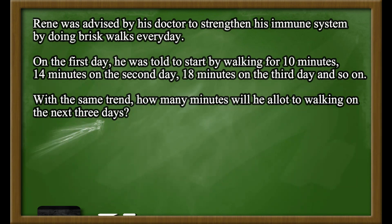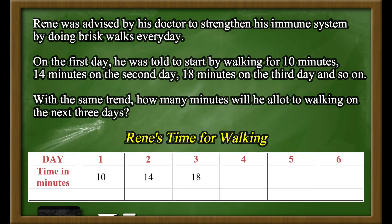To understand this, let's make a table to see the days and walking times of Rene. Here, we can see that Rene walks 4 minutes longer than the previous day — he adds 4 minutes each subsequent day of walking. For the next days, adding 4 minutes again, we find he will walk 22 minutes on the fourth day, 26 minutes on the fifth day, and 30 minutes on the sixth day.